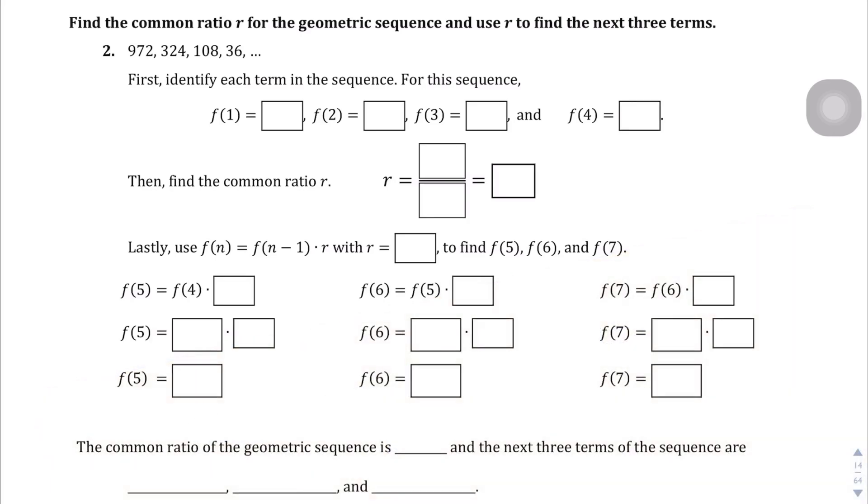We're on page 14 of Algebra 1B Credit 1. We're taking a look at question number 2 and we're trying to find the common ratio for this geometric sequence and use it to find the next three terms. So we have four terms here. We have 1, 2, 3, and 4. And the first step is to just identify the four terms just like we did.